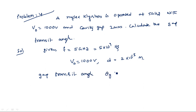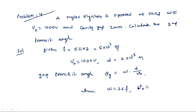The gap transit angle theta_g equals omega into d divided by v0, where omega equals 2 pi f, d is the cavity gap, and small v0 here refers to the velocity of the electron — not voltage. Small v refers to velocity; capital V refers to voltage.